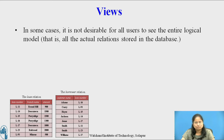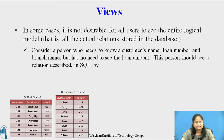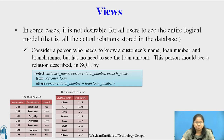Consider the relation loan with the attributes loan number, branch name, and amount, and the borrower relation with customer name and loan number. Consider a person who needs to know the customer name, loan number, and branch name but has no need to see the loan amount. This person should see a relation described in SQL by the query: SELECT customer_name, borrower.loan_number, branch_name FROM borrower, loan WHERE borrower.loan_number = loan.loan_number.